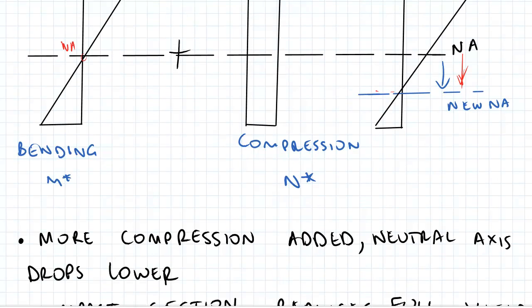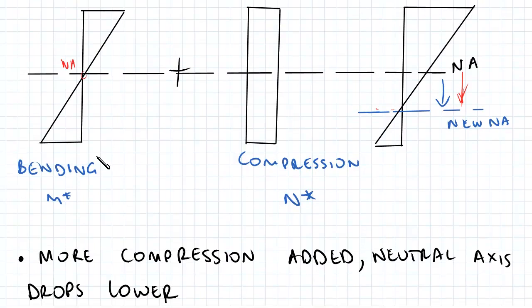What I've really noted here is as more compression is added to a beam undergoing bending, the neutral axis drops lower.